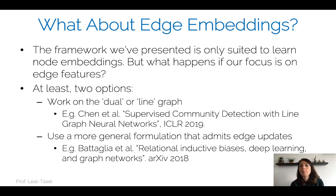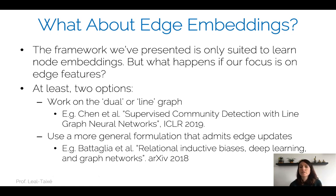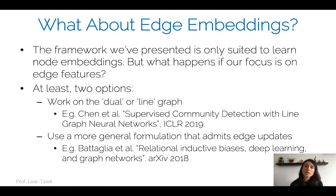So far we have talked only about updating the node embeddings. We haven't done anything with the edge embeddings. The framework presented is only suited to learn node embeddings. But what if we're interested in edge features? If you want to learn both node and edge embeddings, you have at least two options: work on the dual graph, updating edge embeddings instead of node embeddings, or a more general formulation with alternating node updates and edge updates.